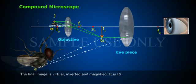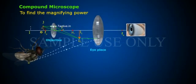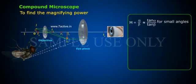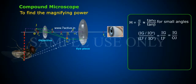To find the magnifying power: M = α/β ≈ tan α/tan β for small angles. (IG/IO")/(IJ'/IO") = IG/IO" = IG/OJ.